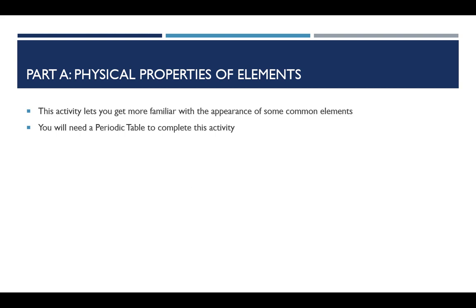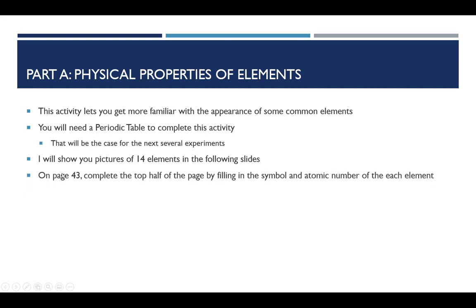And you'll need a periodic table to complete this activity. So there should be a periodic table available in your textbook, and your instructor will certainly provide you with one if you need be as well. And you will need a periodic table really throughout this class. So for the next several experiments and certainly to prepare for exams. So what I'm going to do here is show you pictures of 14 elements in the following slides. And then following the directions that come a few pages earlier, on page 43, you're going to complete the top half of that page by giving some information that you're requested to give.